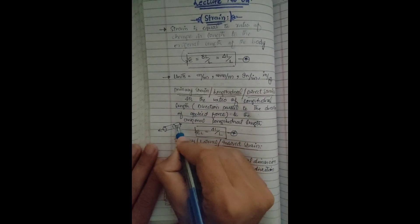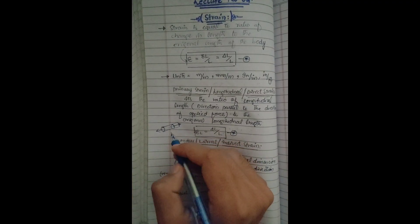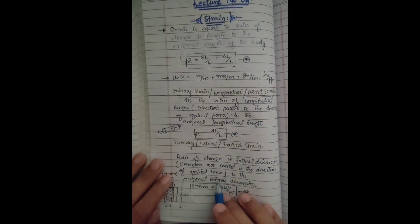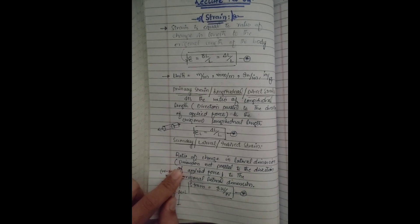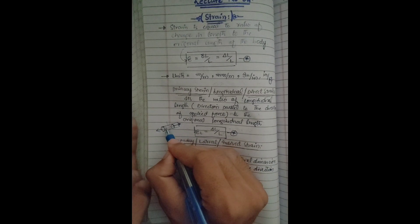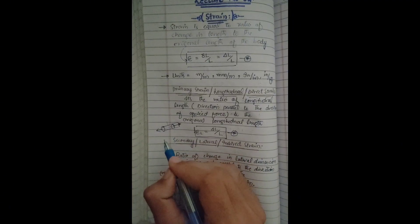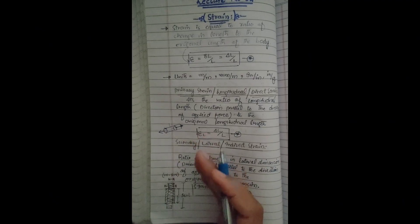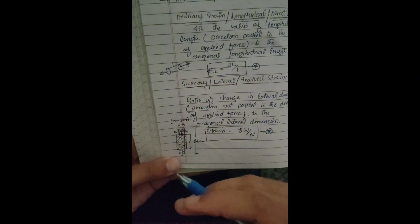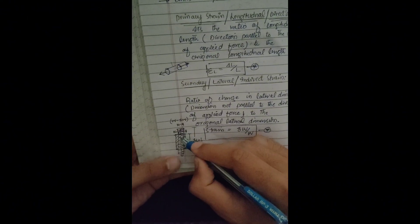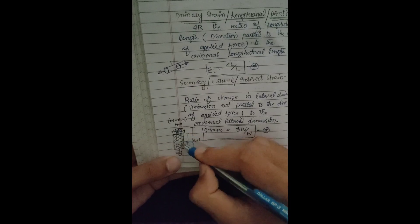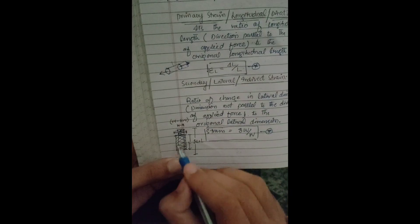Lateral strain is the secondary strain. When a body is elongated, there is also a change in the Y-axis — the lateral dimension. The force is applied in the axial direction, causing elongation, while the lateral dimension shortens. So while the elongation is parallel to the applied force — giving us longitudinal strain — there is also a change in the lateral dimensions. This lateral change per unit length is called lateral or secondary strain.